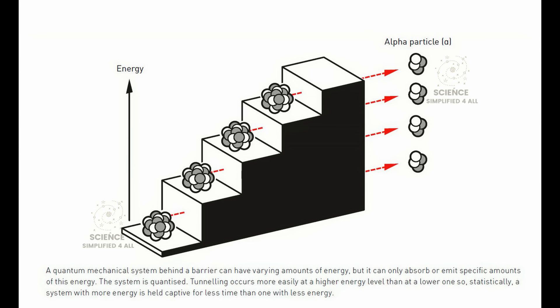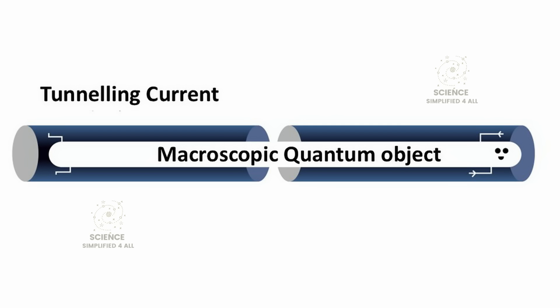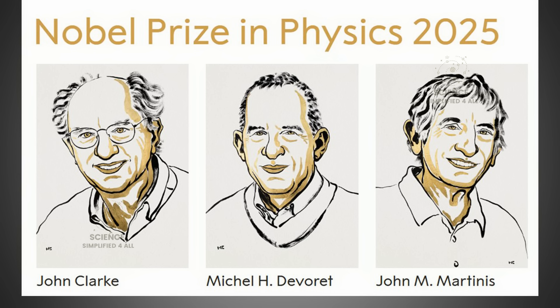They observed that the entire superconducting current in these circuits could tunnel through the barrier as one unified entity. Not only that, this current also displayed another distinct quantum behavior, the presence of discrete energy states. This means it could also exist in a superposition of those states at the same time. These are the kinds of quantum phenomena we have only ever observed on the microscopic scale, until now. Through this discovery, they succeeded in bringing quantum effects to a macroscopic scale, where they could finally be observed and measured directly. That was the true achievement of their work.